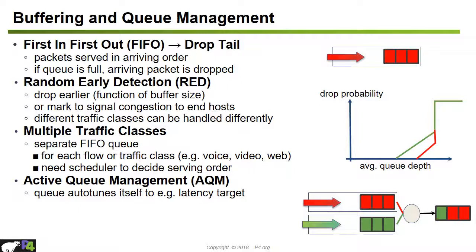Recently, a lot of research has been done into active queue management (AQM), where queues auto-tune their parameters to maintain a stable queuing latency target. The problem with RED is that its drop probabilities must be specified and configured manually, which involves many parameters. AQM mechanisms dynamically tune their parameters based on queue length and arrival rate — for example, maintaining a target queuing latency of 5 milliseconds. Examples of AQM schemes include CoDel, PI, and FQ-CoDel.